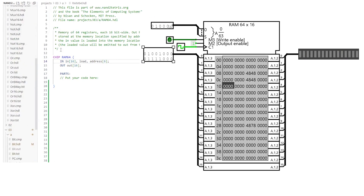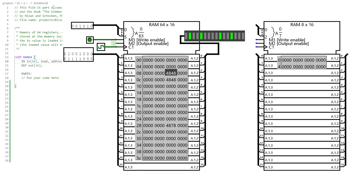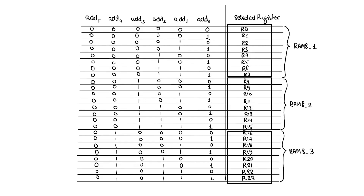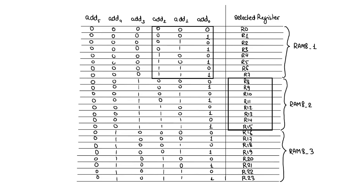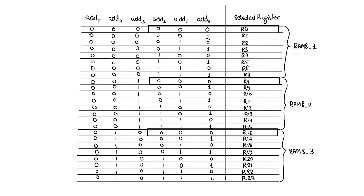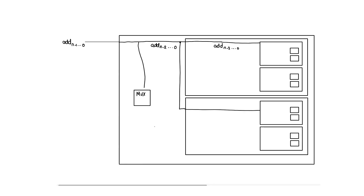RAM 64 is a memory of 64 registers and needs a 6-bit address signal. To make it using RAM 8 chips — since we don't have large multiplexers and demultiplexers available — we use eight RAM 8 chips for a total of 64 registers. The three least significant bits select individual registers within each RAM 8, while the remaining three most significant bits differ between RAM 8 chips. So the least significant bits select registers within a RAM, and the remaining most significant bits select which RAM chip. This is the most common pattern in multi-level devices: lower-level devices are selected by least significant bits while higher-level devices use the remaining most significant bits.